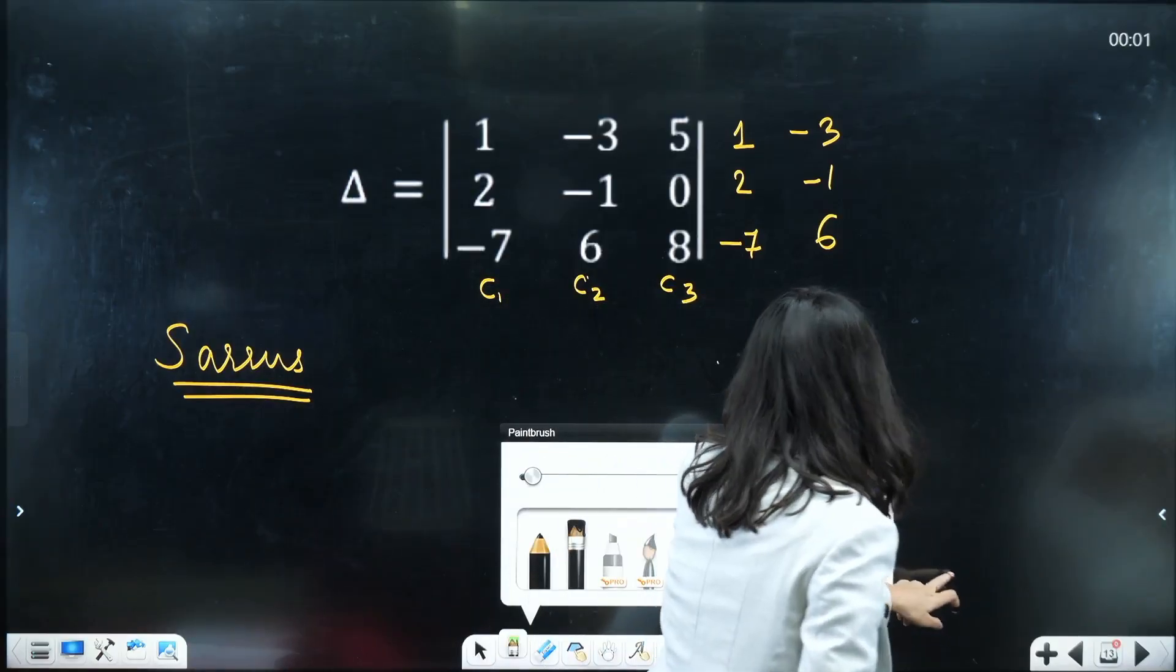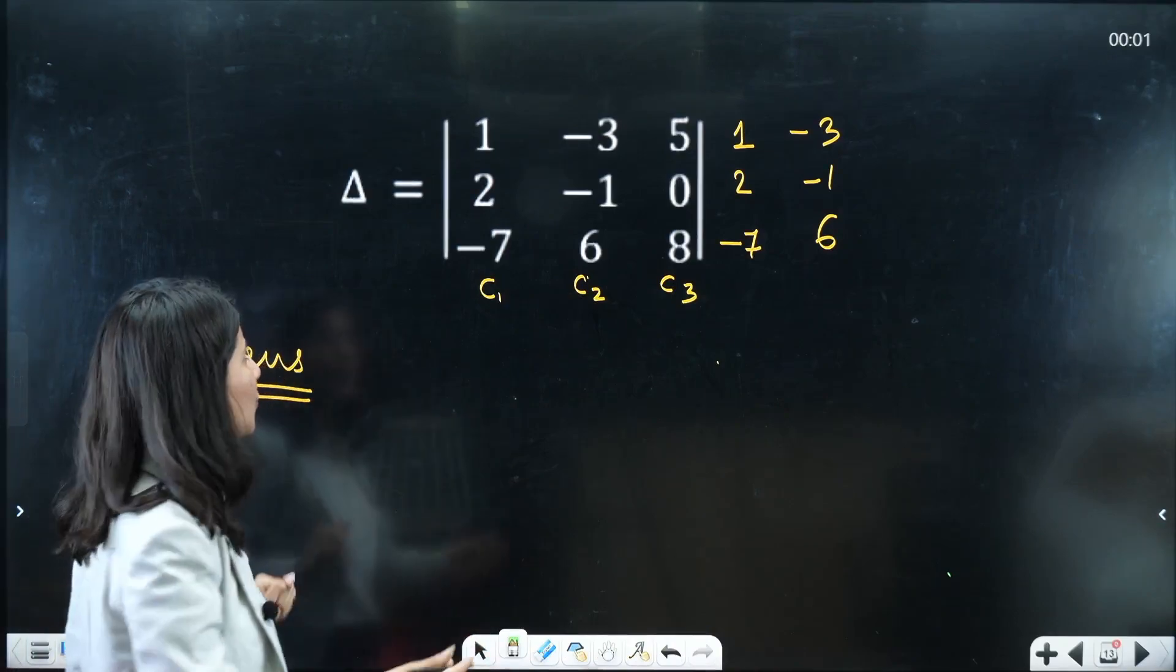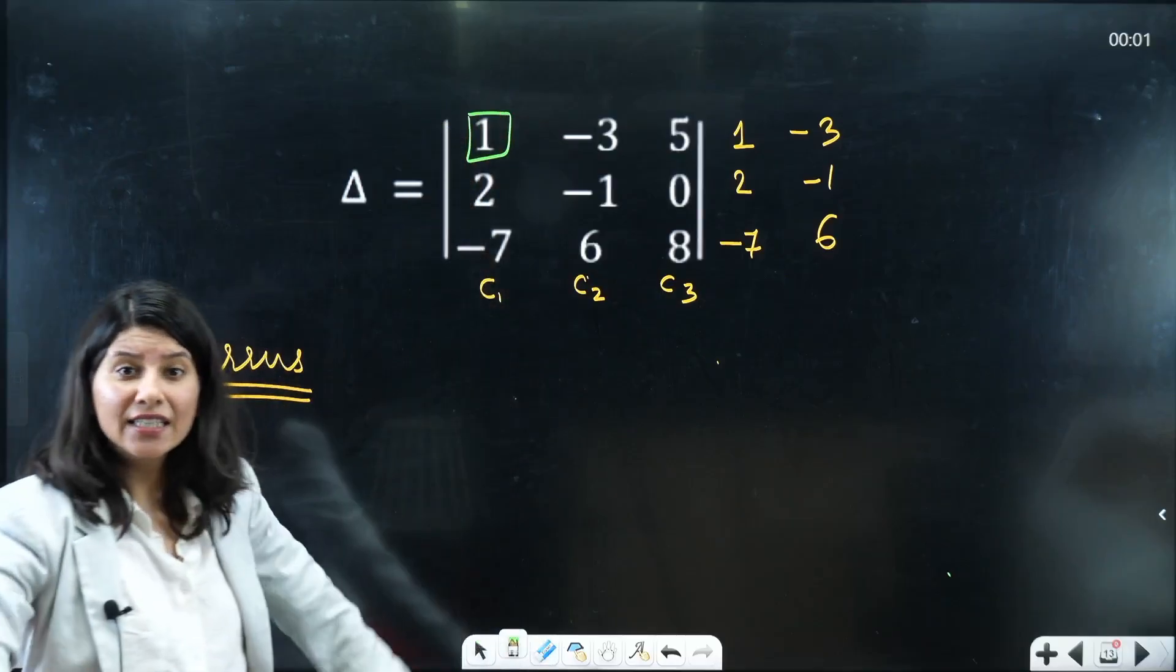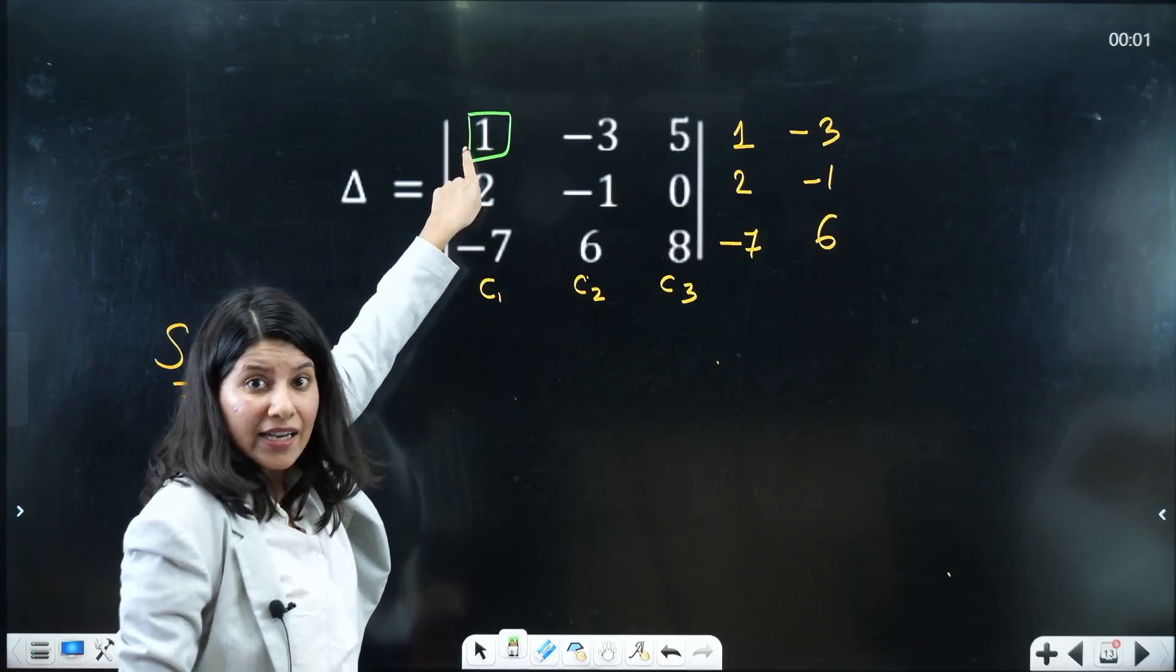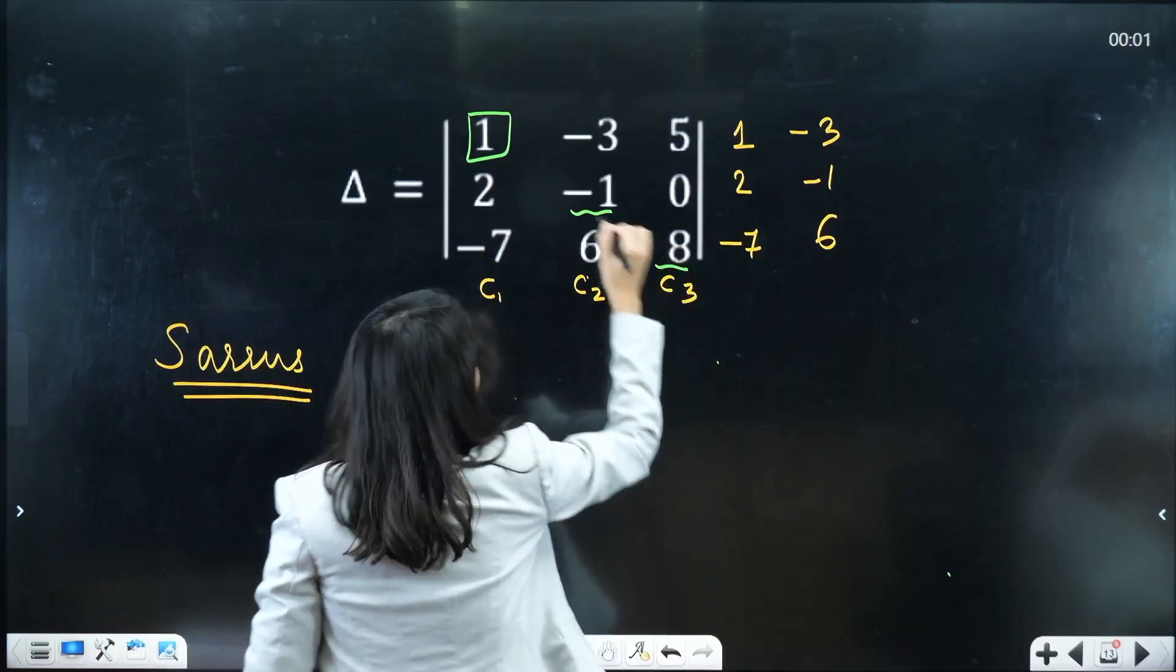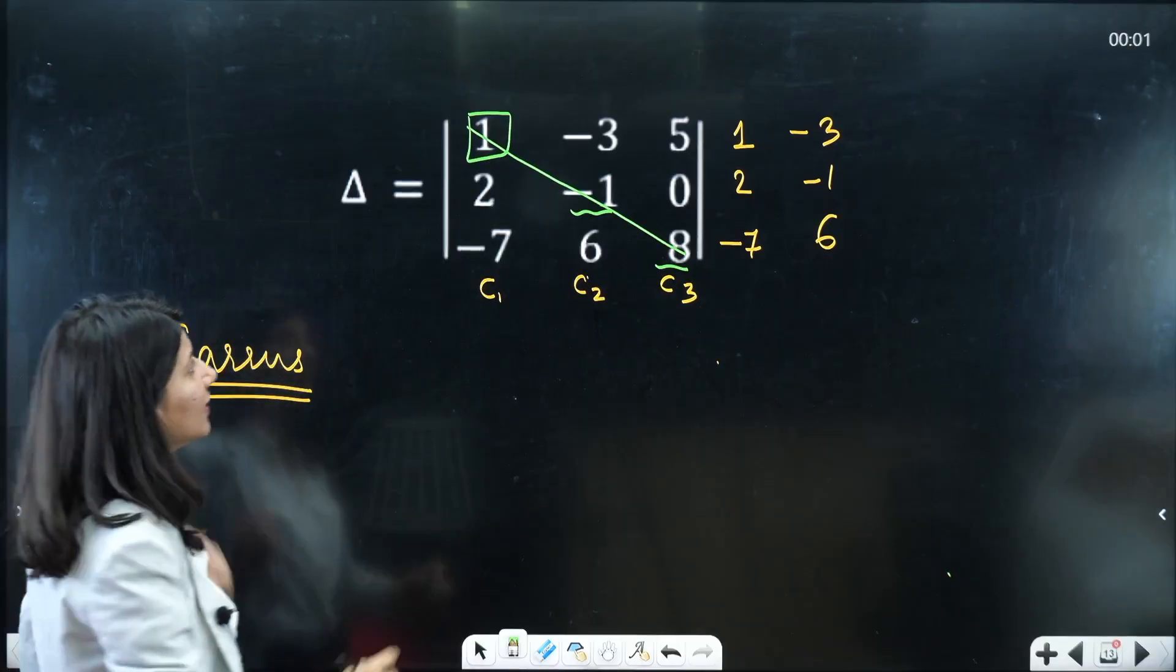now what you need to do is you need to multiply. So you need to start from this very first element of this determinant that is 1 and you need to cover the complete diagonal 1, minus 1 and 8. So you are going to multiply these three elements. What will you get?